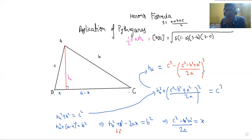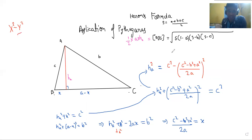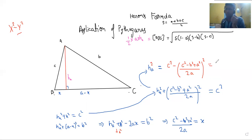Just use the difference of squares formula — whenever you see a difference of squares, you don't want to expand it, especially if there is such a huge expression inside. That's why we use the difference of squares formula. So this A squared and B squared — we apply that factorization.